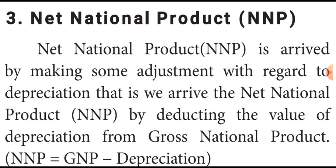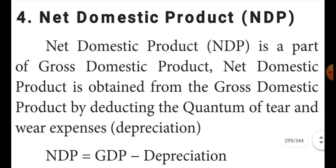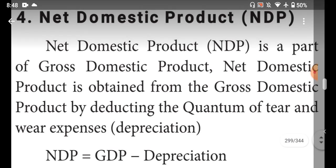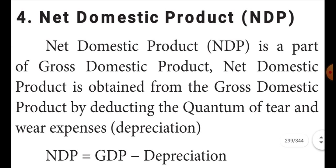Fourthly, net domestic product. Inside the country, how much they are producing — during that producing time some goods get damaged. Through those damaged production areas, the damaged goods items need repairing, and they want to spend some money. That particular money is reduced through net domestic product. That is called net domestic product.